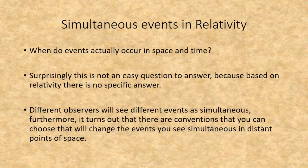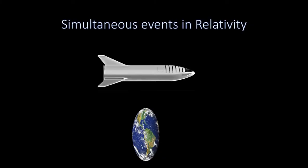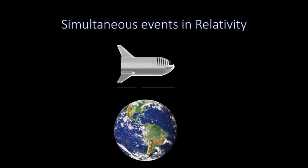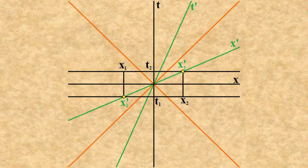When does an event occur in space-time? Surprisingly, this is not an easy question to answer, because based on relativity, there is no specific answer. Different observers will see different events as simultaneous. Furthermore, there are conventions that you can choose that will change the events you see as simultaneous at distant points of space. If a spacecraft passes by the Earth with a relative speed of nearly the speed of light, from the perspective of someone on board the ship, two flashes occur at the same time. Someone on Earth will see these events differently — first the event at the rear of the spacecraft, then the event at the front. Those on the spacecraft literally have a different idea of 'now' than those on Earth, as their coordinate systems are tilted with respect to each other.